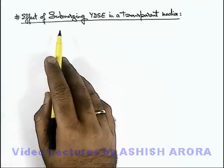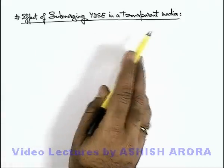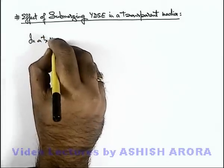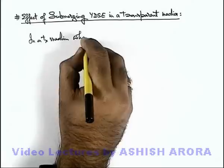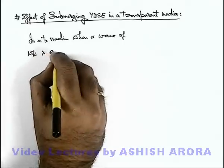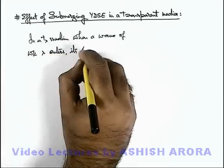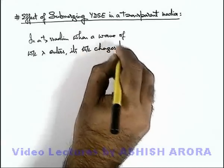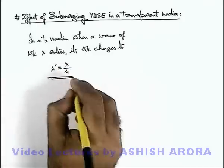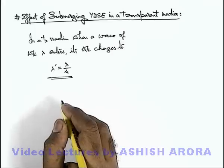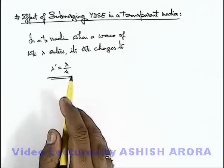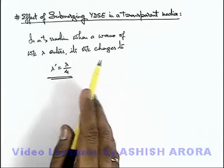Let us now study the effect of submerging a YDSE setup in a transparent medium. In a transparent medium, when a wave of wavelength lambda enters, its wavelength changes to lambda prime, which can be written as lambda by mu, where mu is the refractive index of the medium. This is because the speed of light changes from c to c by mu, and frequency remains the same in any transmission of light from one medium to another.